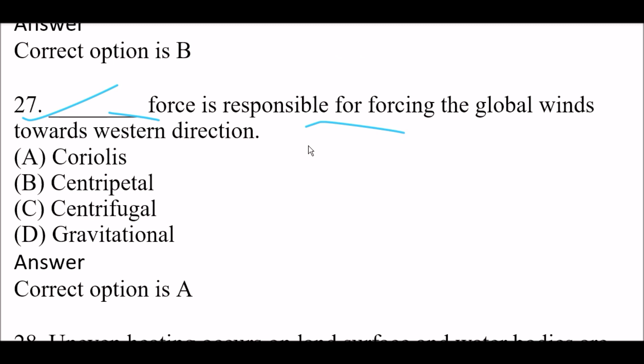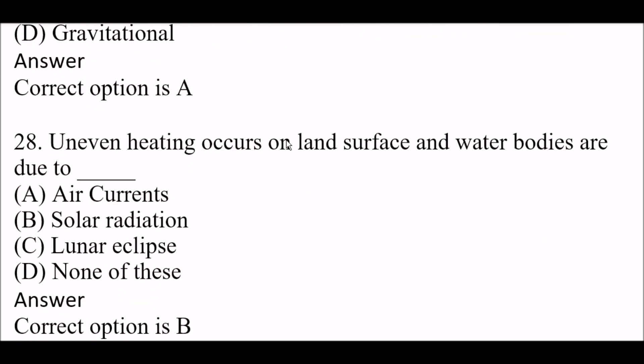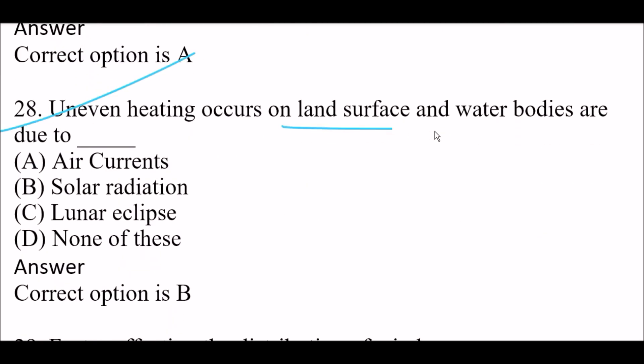Option A: Coriolis. Option B: centripetal. Option C: centrifugal. Option D: gravitational. Right answer is Option A — Coriolis force is responsible for forcing global winds to move in a westward direction. Next question: uneven heating on land surface and water bodies is due to — Option A: air currents. Option B: solar radiation. Option C: lunar eclipse. Option D: none of these. Right answer is Option B — solar radiation.